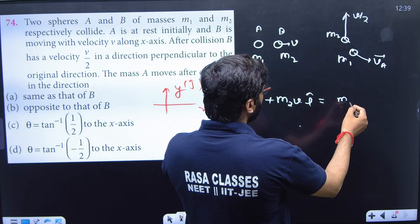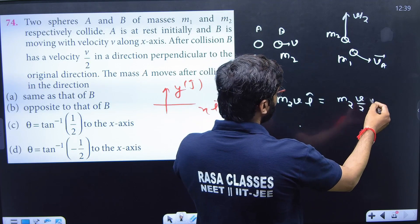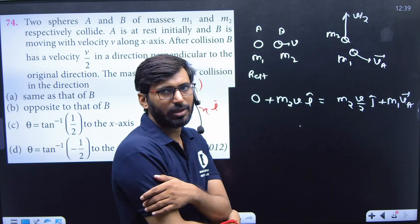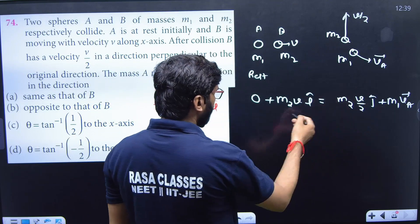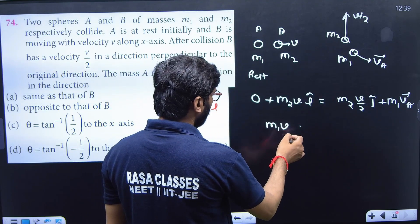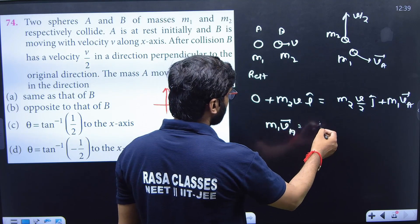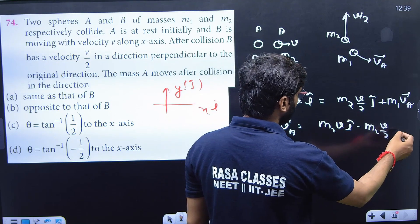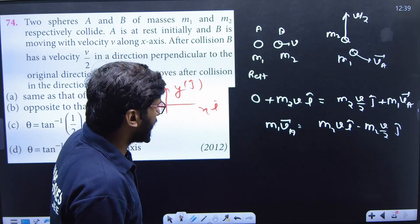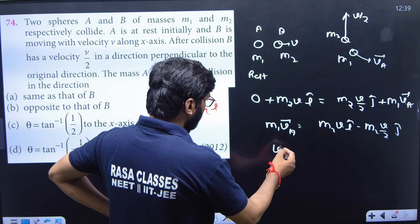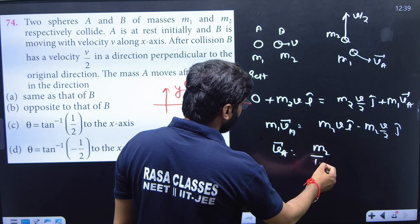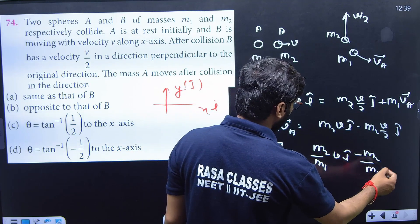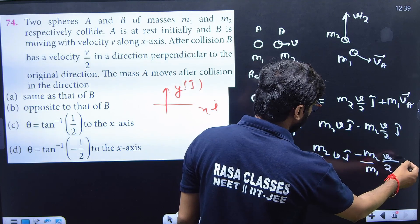Using conservation of momentum: initial momentum is m2·v î-cap. After collision, B has momentum m2·(v/2) ĵ-cap, and A has momentum m1·vA vector. So we can write: m1·vA vector = m2·v î-cap − m2·(v/2) ĵ-cap. Therefore, vA vector = (m2/m1)·v î-cap − (m2/m1)·(v/2) ĵ-cap.